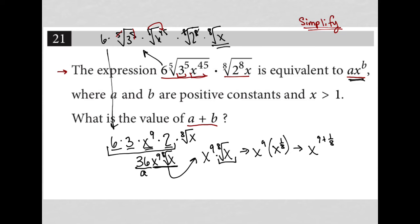In order to add 9 plus 1/8th, I need to have a common denominator. So, this becomes 9/1 plus 1/8. I need to have an 8 denominator. So, I'm going to multiply by 8 on bottom and on top. This turns into x to the 72/8 plus 1/8, which is simply x to the 73/8.